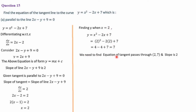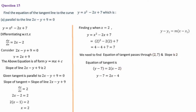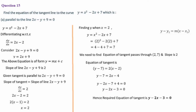All required materials are ready — point (2, 7) and slope m = 2. Using y − y₁ = m(x − x₁): y − 7 = 2(x − 2), so y − 7 = 2x − 4. Rearranging: y − 2x − 3 = 0. Hence the required equation of the tangent is y − 2x − 3 = 0.